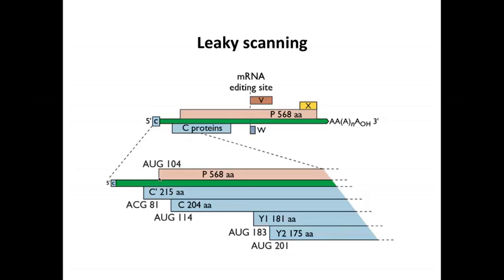Finally, ribosomes reach position 114, which is a good AUG in a good context, so the remainder of the ribosomes initiate there. There are also two downstream initiation sites at positions 183 and 201, and these are initiated by ribosome shunting — where ribosomes load on the 5' end, scan a bit, and then leap over distances to AUG 183 and 201, making two more proteins.